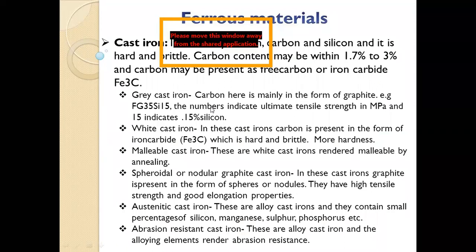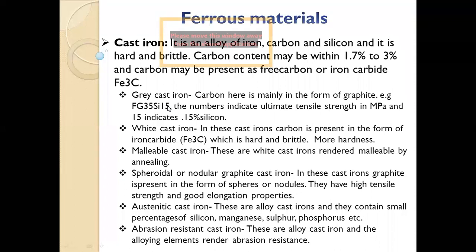For gray cast iron, taking the example FG 35 Si 15: 'Si' means it contains silicon at 0.15 — that is 15 parts per hundred, or 0.15% silicon. The '35' refers to its ultimate tensile strength of 35 MPa.